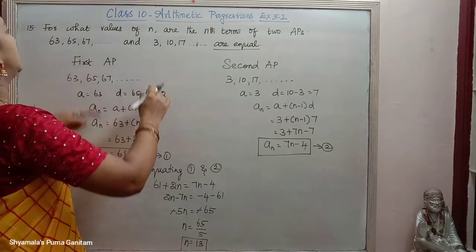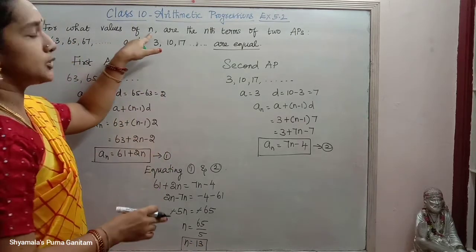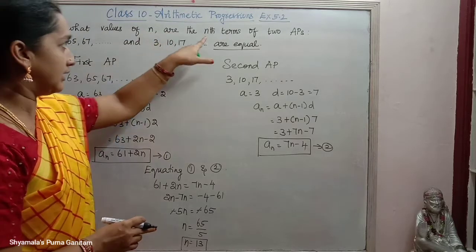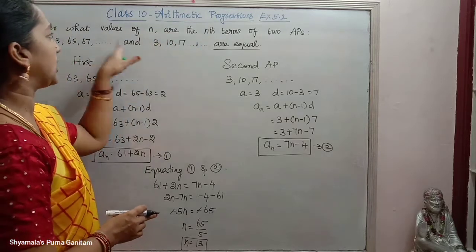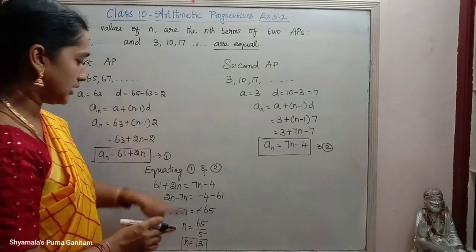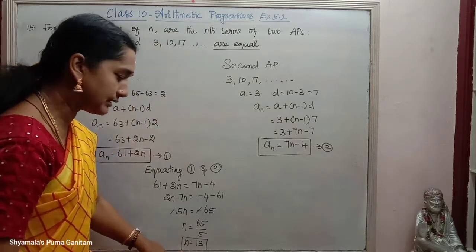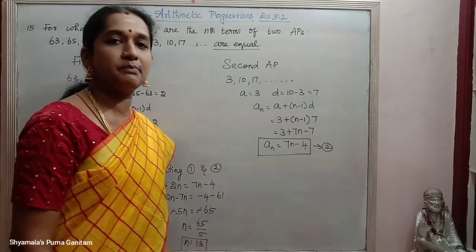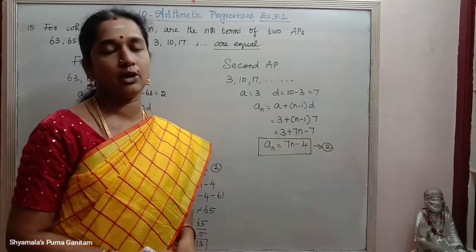So for what value of N are the Nth terms of the 2 APs equal? For N equal to 13, both the APs are equal.